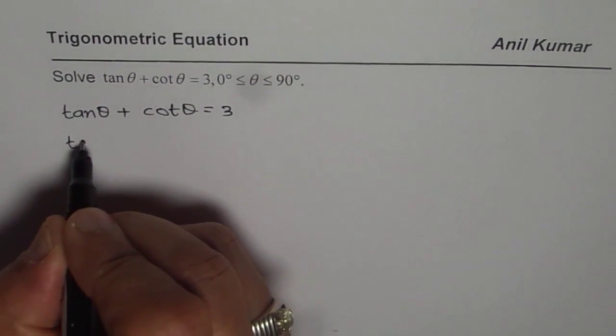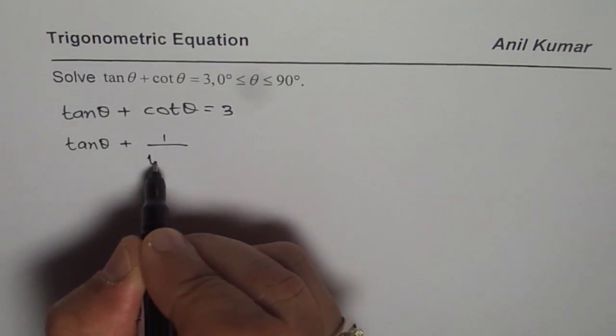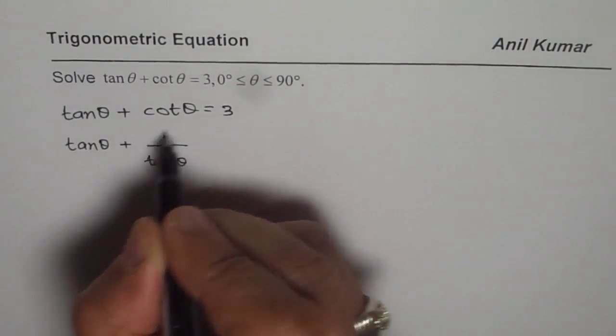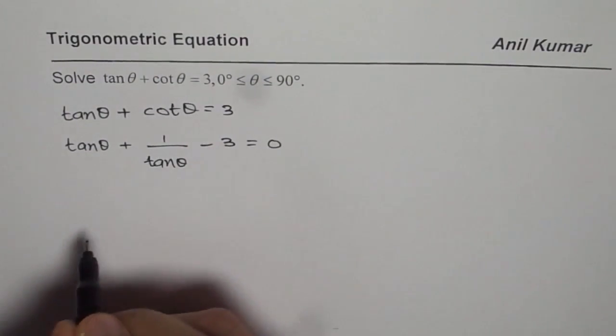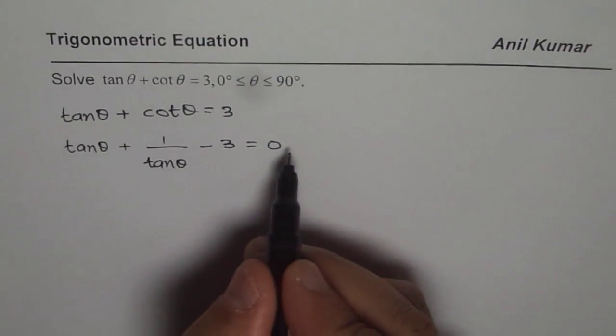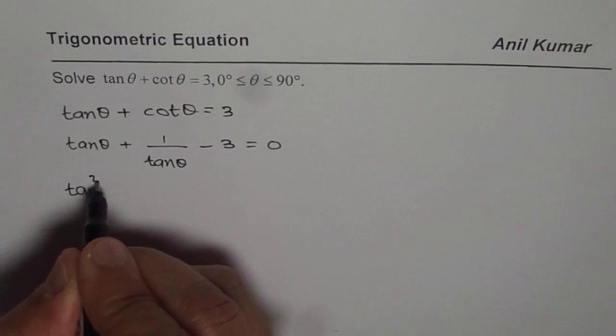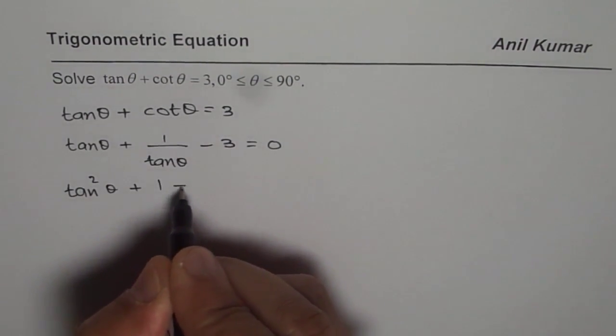We can write this as tan θ + cotangent is 1 over tan θ. So 1 over tan θ, we can bring 3 to the left side, so minus 3 equals 0. Now multiplying both sides by tan θ, we get tan² θ + 1 - 3 tan θ = 0.